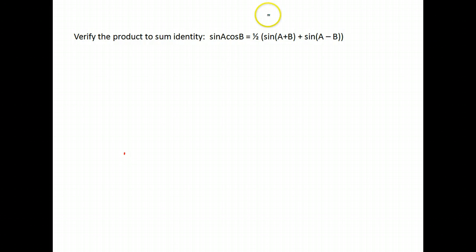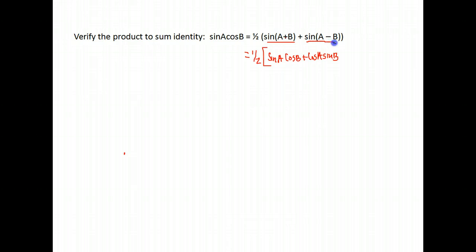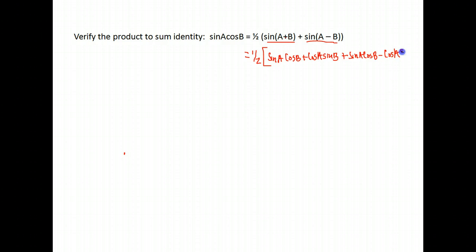To prove this, we're going to leave the left-hand side alone and expand the right-hand side. It's times one half, and we expand sine of A plus B — that's sine A times cosine B, plus cosine A times sine B. Then we add sine of A minus B, which is sine A times cosine B, minus cosine A times sine B.